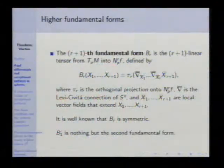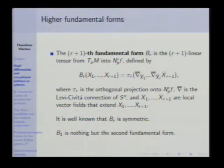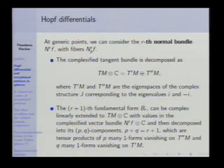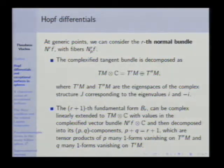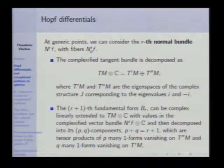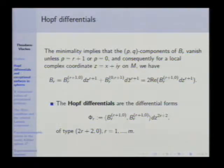The higher fundamental forms are defined by taking iterated derivatives and projecting onto the higher normal space of order R. Of course, the first B1 is nothing but the second fundamental form. Now we complexify everything. Generically, we can speak about the normal bundle of order R. We have the complexified tangent bundle, which splits as usual as the sum of the eigenspaces of the complex structure. We look at the higher fundamental form and take the dz and dz-bar decomposition. Because of the minimality, it turns out that this decomposition has only two terms.